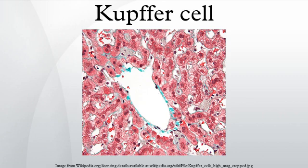History. The cells were first observed by Carl Wilhelm von Kupffer in 1876. The scientist called them stern-zelen, but thought, inaccurately, that they were an integral part of the endothelium of the liver blood vessels and that they originated from it. In 1898, after several years of research, Tadeusz Browicz identified them, correctly, as macrophages.